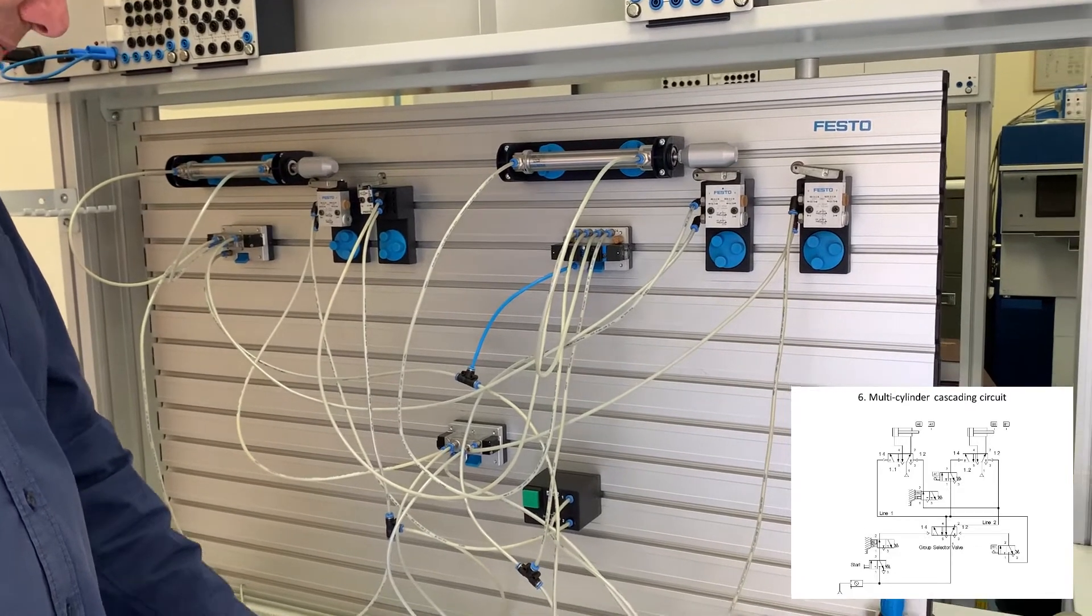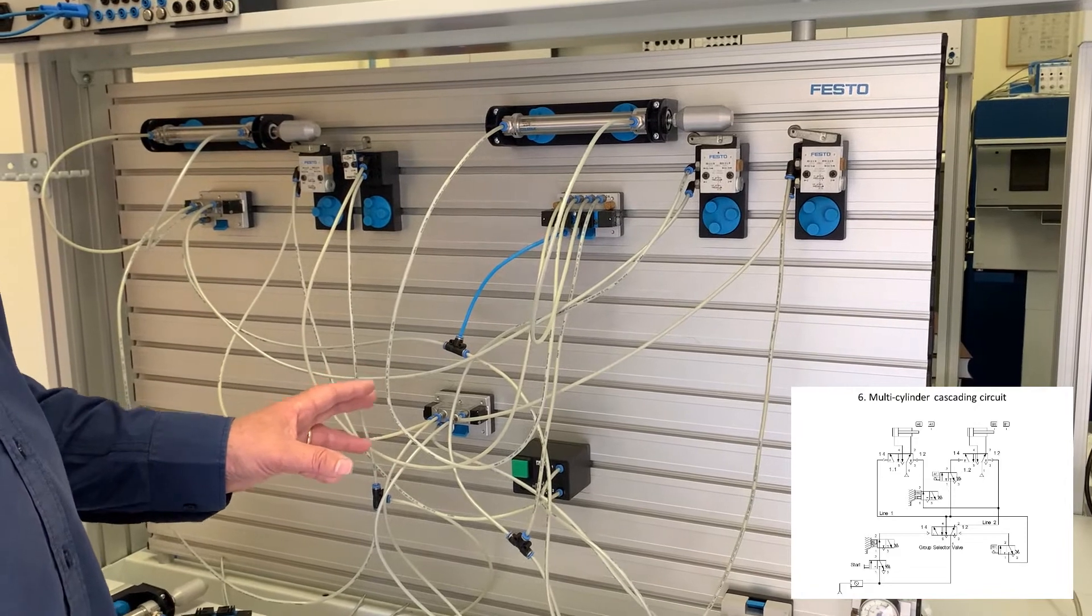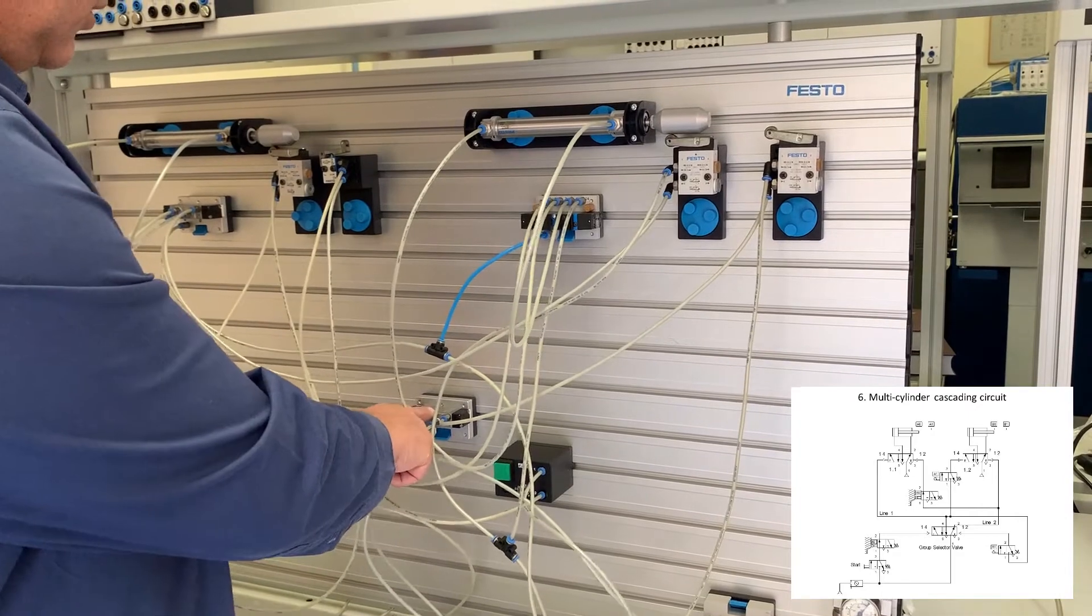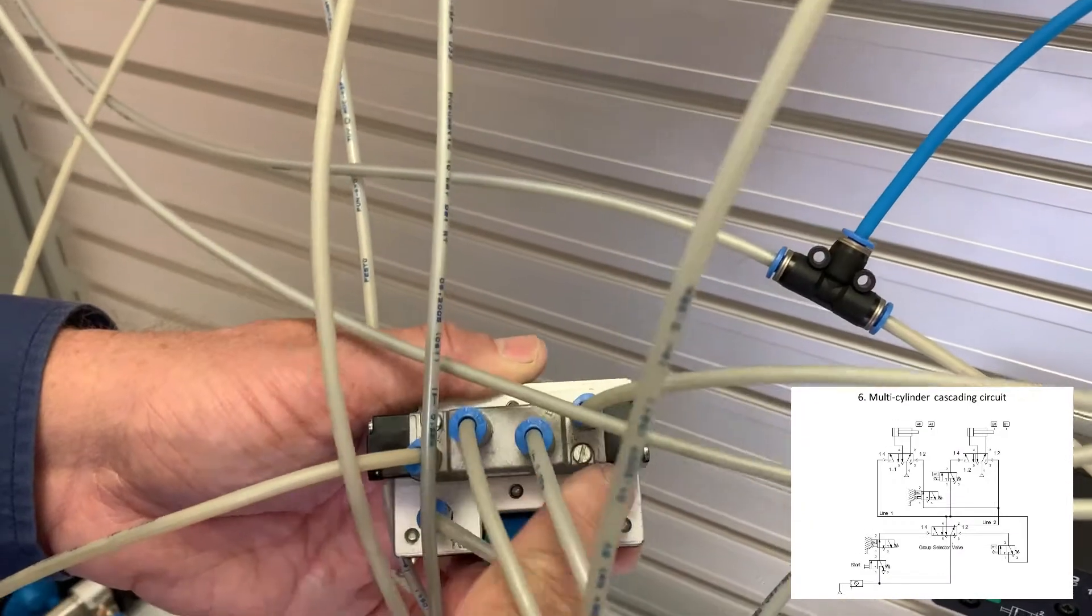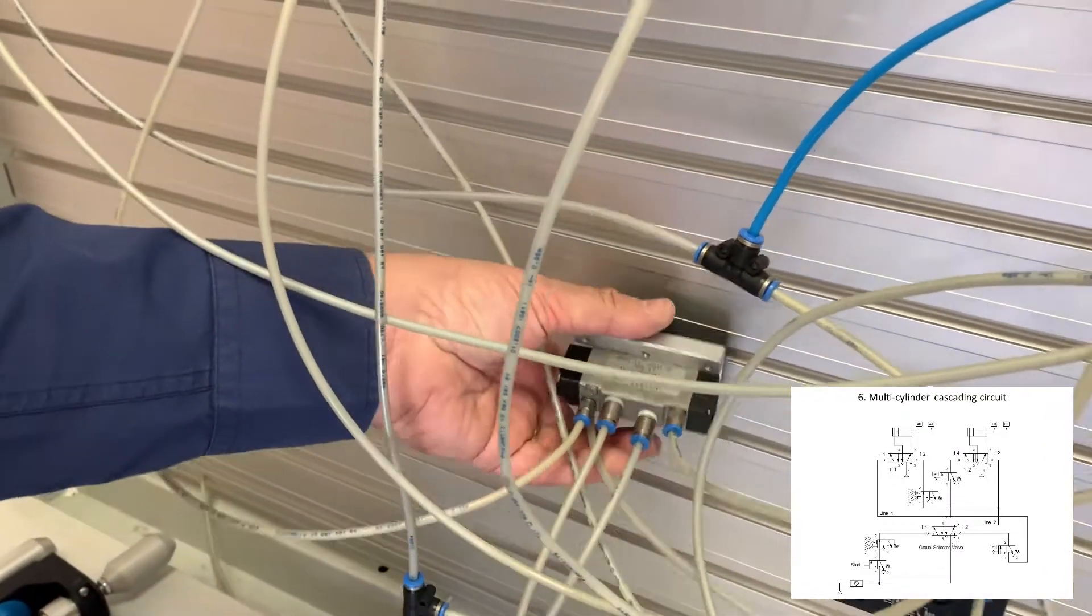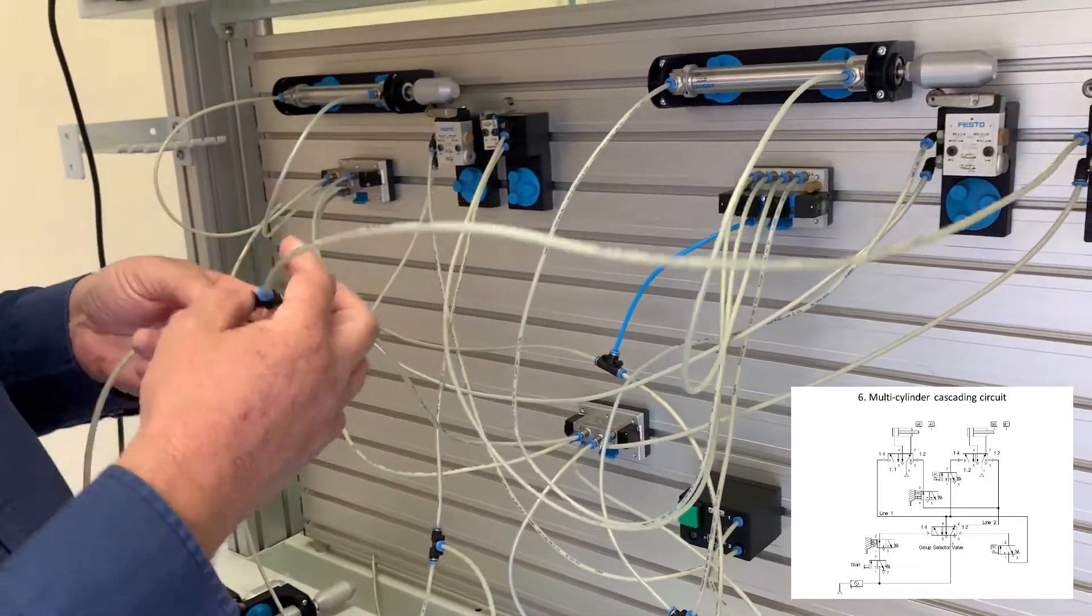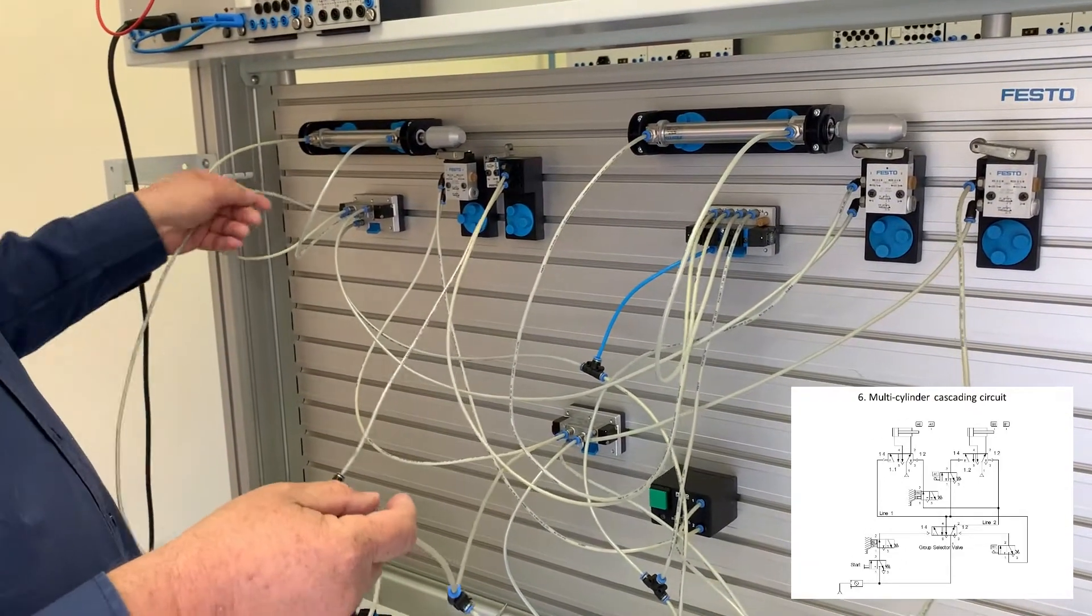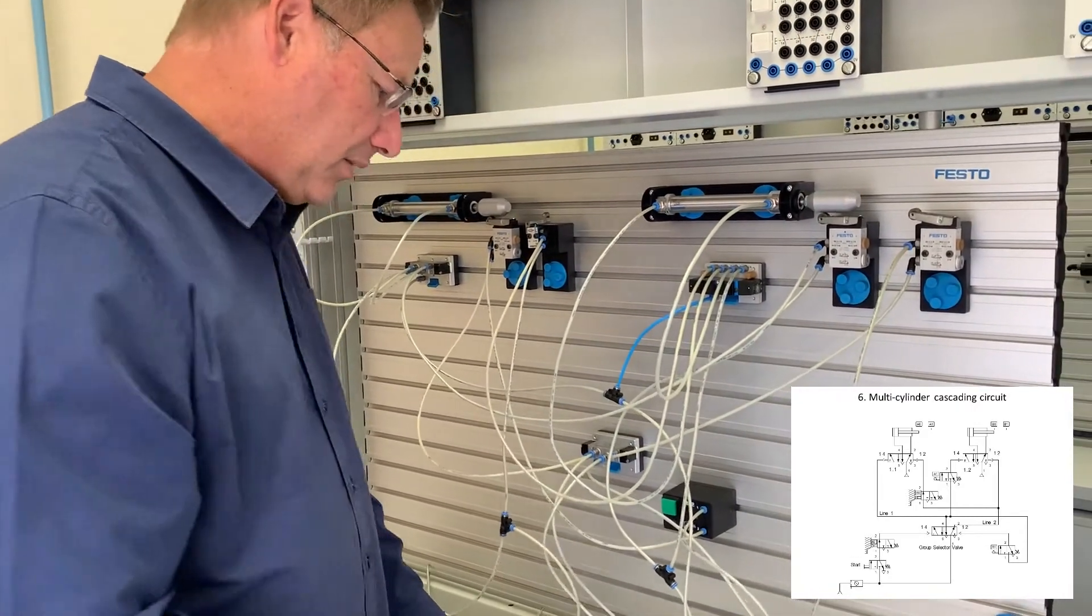All right so when you push our start button that activates line one and line one is connected to port number two on this one. So if you look closely you have to look really closely to see the numbers, you can't really see in the video I think, but there's port two and everything connected to this line is line number two and that will start the first step in the sequence.